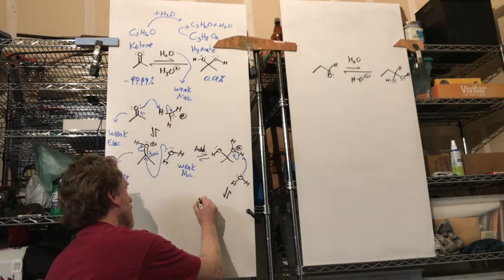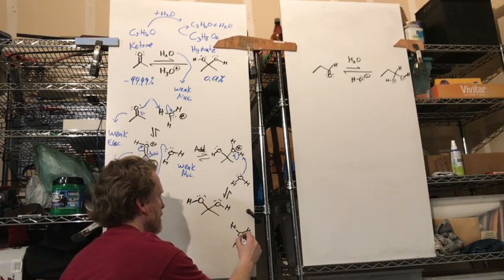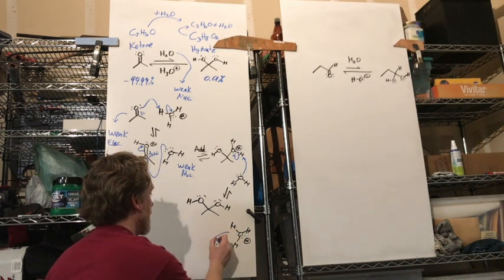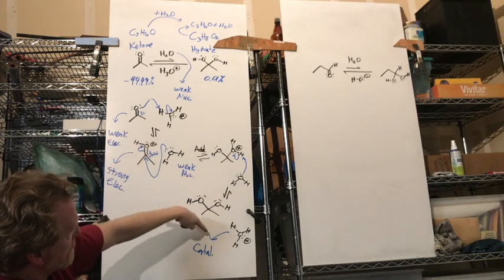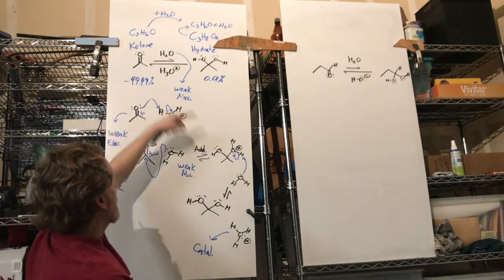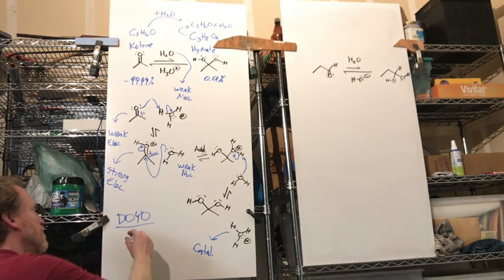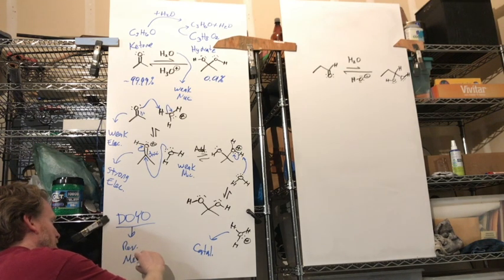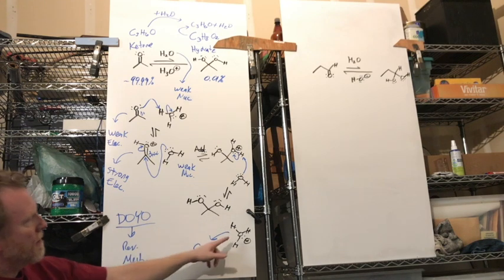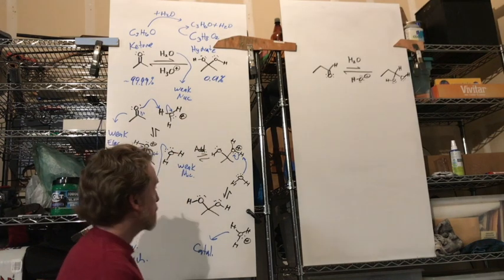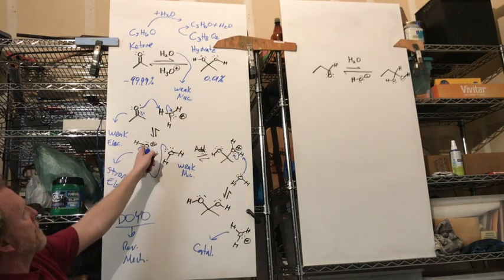The equilibrium is heavily favored toward the ketone — 99.99% — but it's still important for reactions. A good practice exercise is to do the reverse mechanism: under acidic conditions, protonate one of the alcohols — they're bad leaving groups otherwise — and then when you have a good leaving group, drop down a lone pair and kick it off in a push-pull step, then deprotonate to get back to the carbonyl. That would be a good dojo exercise.